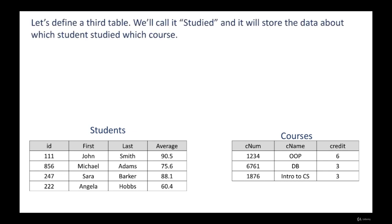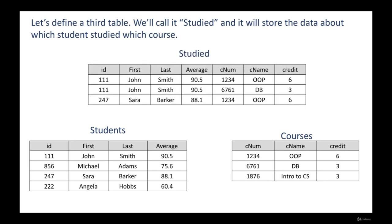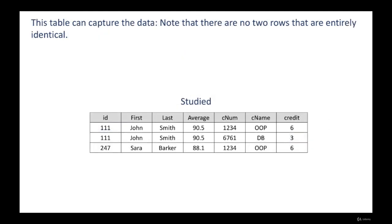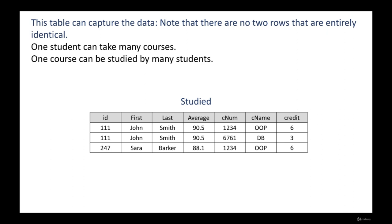So what is the solution? Let's define a third table called 'studied' that stores data about which student studied which course. This table consists of elements from both the students and courses tables. One student can take many courses — John Smith appears twice in this table, but each time with a different course so the rows are not entirely identical. One course can be studied by many students — OOP is taken by two students. So this table can capture all the data we want about which student studied which course.